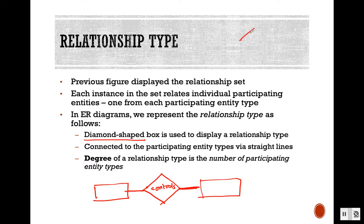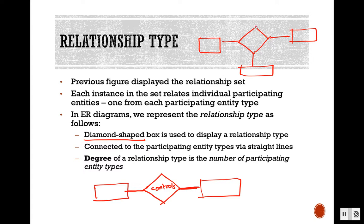We can also have a relationship that connects three entity types — that would be a ternary relationship. We don't have any example of this in the company database, but a relationship connecting more than two entity types is possible. With only two participating entities, it is a binary relationship.